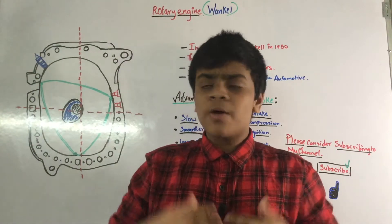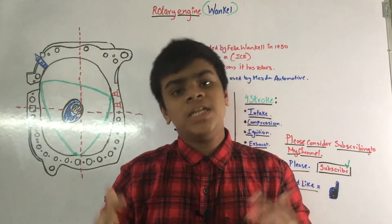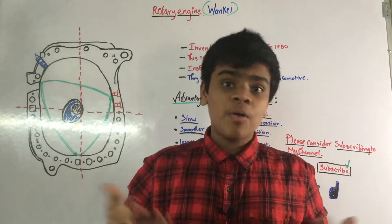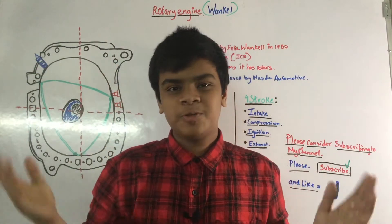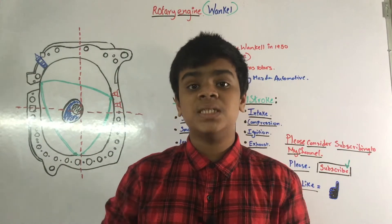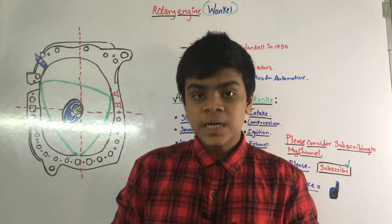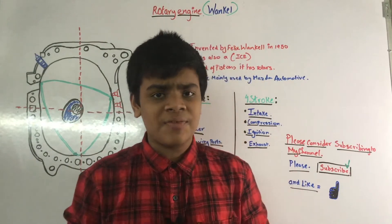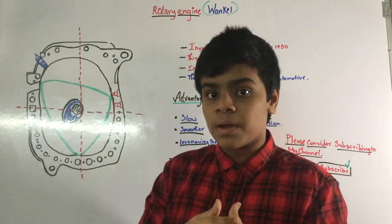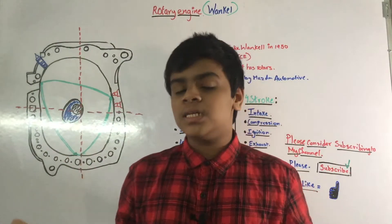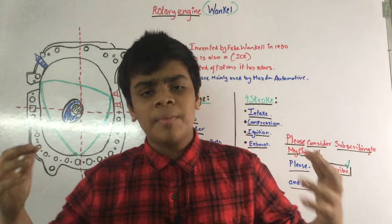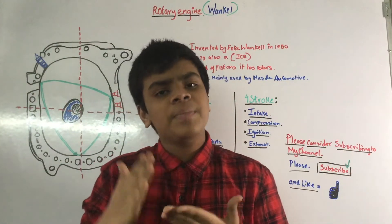Hello guys, welcome. My name is Sir. In this week's video we are going to be talking about the combustion process in a rotary engine. In a previous video I explained the combustion process in a piston-driven internal combustion engine. There are two types of ICE commonly used in cars: rotary and piston. This week we're talking about the rotary engine — its combustion process, advantages, disadvantages, and why people stopped using it.